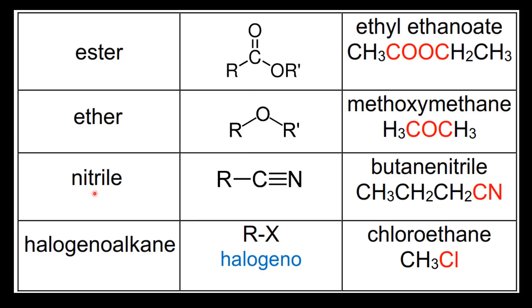Next we have the nitriles. The nitriles have a carbon to nitrogen triple bond — an example is butanenitrile. And finally we have the halogenoalkanes. The functional group is halogeno — an example is chloroethane.